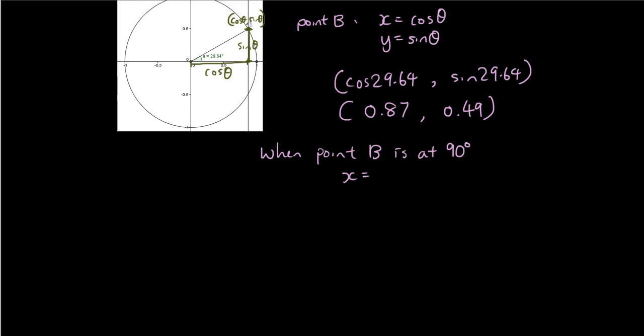So we can say when point B is at 90 degrees from the horizontal from the original point, x-coordinate is equal to 0, y-coordinate is equal to 1. And so therefore remember point B the x is equal to cosine and y is equal to sine.